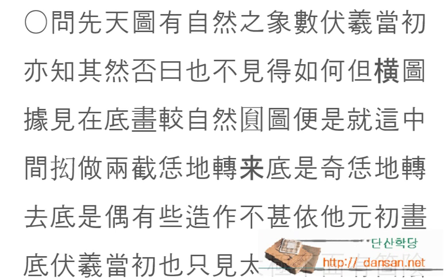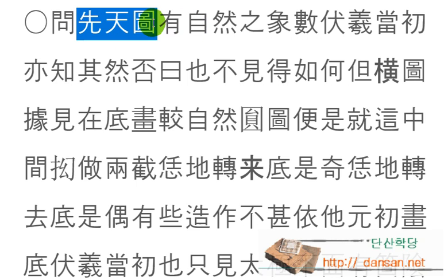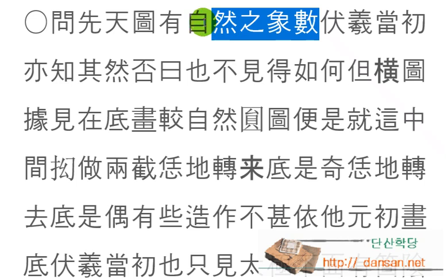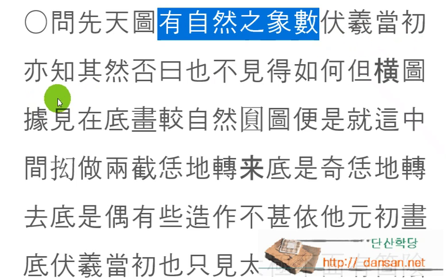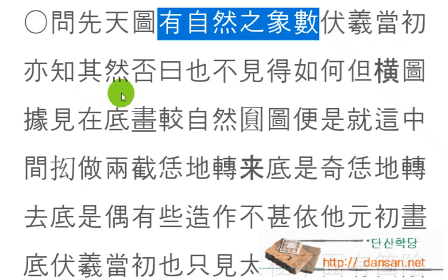문선천도유자연지상수안에, 질문하되 선천도에서는, 선천의 그림에서는 자연스러운 상과 수가 있으니. 복희가 당초에 그러한 것을 알았습니까? 몰랐습니까? 그거예요. 왈야.